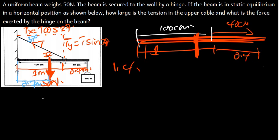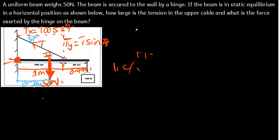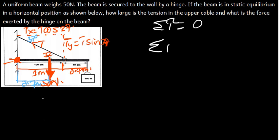Here is our hinge. This hinge is going to be our point of axis — that will be our pivot — meaning that we don't have any torque at this point. When we talk about static equilibrium, we are talking about three things: the summation of all the torques equals 0, the summation of all the forces in the x-direction equals 0, and the summation of all the forces in the y-direction equals 0.